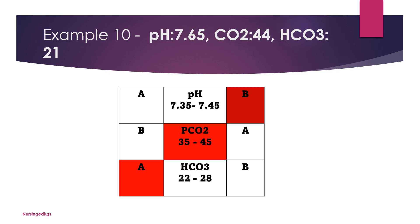In example ten: pH 7.65 — alkaline; PaCO2 44 — about normal; bicarb 21 — acidic. This is one of those results where you would need a redraw or revalidation, because this represents a mixed or complex acid-base imbalance. The pH shows alkalosis, however the CO2 and HCO3 are moving in opposite directions. This can happen when there are two or more primary disturbances occurring simultaneously.